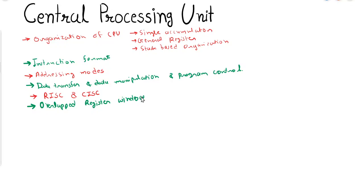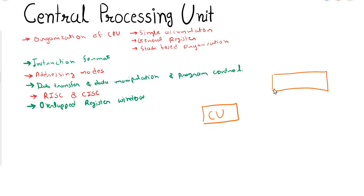Now let's have an introduction to CPU organization. We have discussed various elements previously. Let me try to show you the major components of the CPU. If we draw a simple block diagram of the CPU, there will be three units: the first is the control unit, the second is the register set, and the third is the arithmetic logic shift unit.